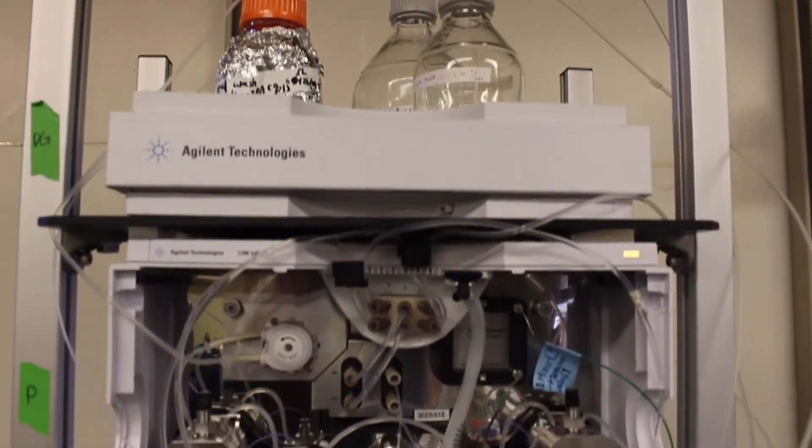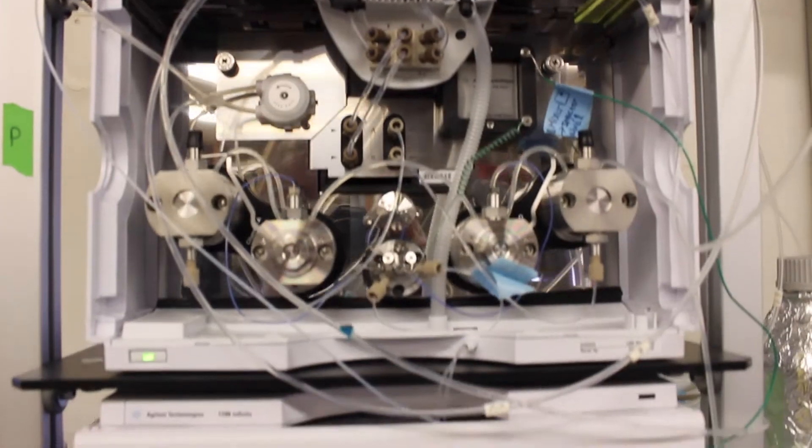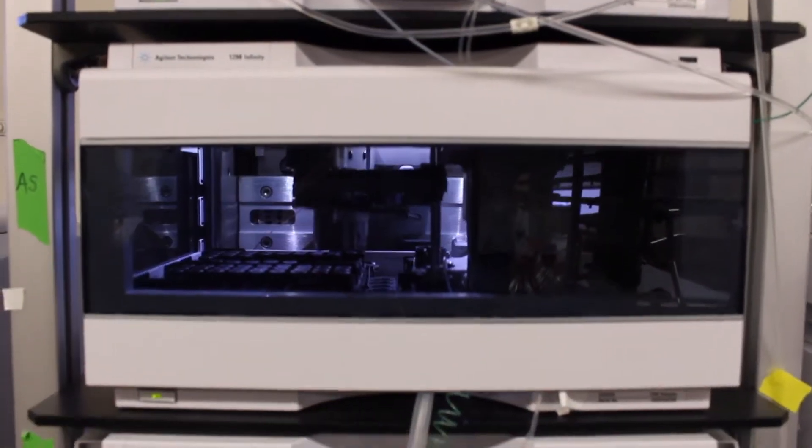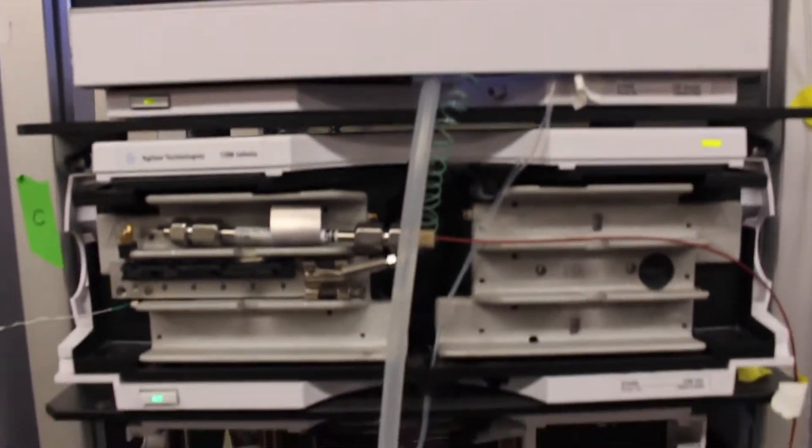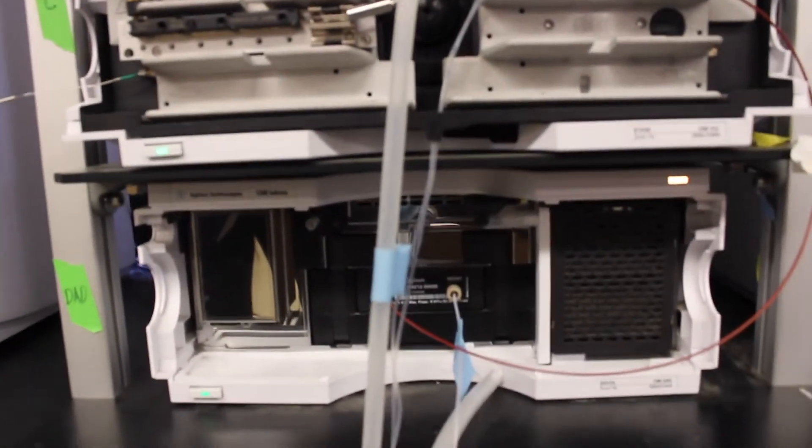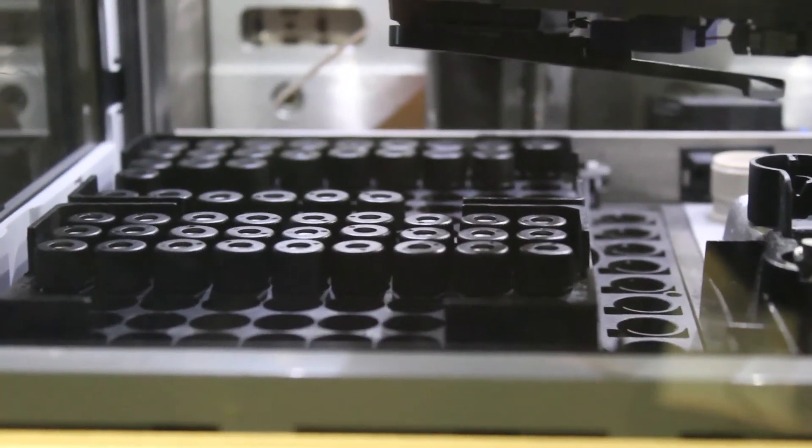This ultra-high-performance liquid chromatography is connected to a diode array detector and a fluorescence detector, which allows us to analyze phytophenolics in complex food matrix. Many of our publications on olive and olive oil phenolics were conducted on this UPLC.